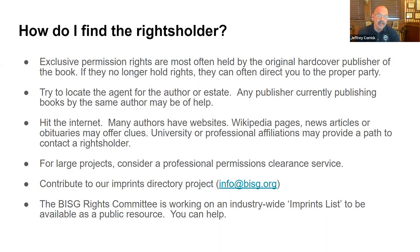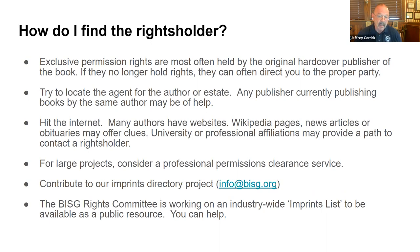BISG currently has an ongoing initiative to create a list of imprints, both current and historic, and who controls rights to those imprints. We're looking for what imprints a publishing house controls — particularly historic imprints that may not still be publishing but to which you still hold rights to the content. If you contact BISG at info@bisg.org, they can tell you exactly what information is needed. This will be made publicly available as a resource for anybody looking up an obscure imprint — like Corbucci Freed or Dodd Mead, there are thousands of them — and needing to find out what publisher currently controls rights to those titles.